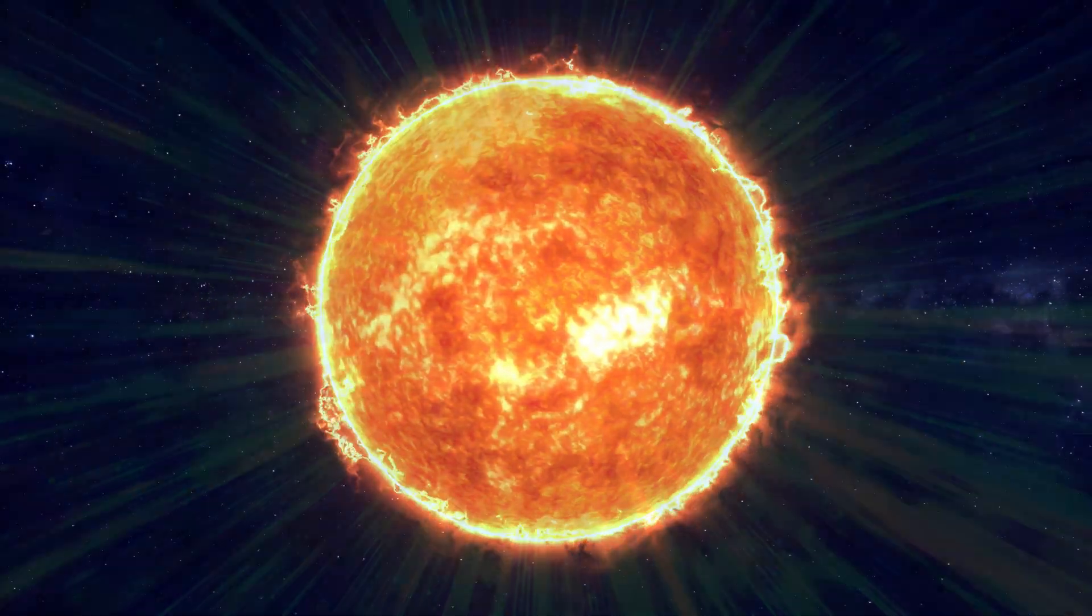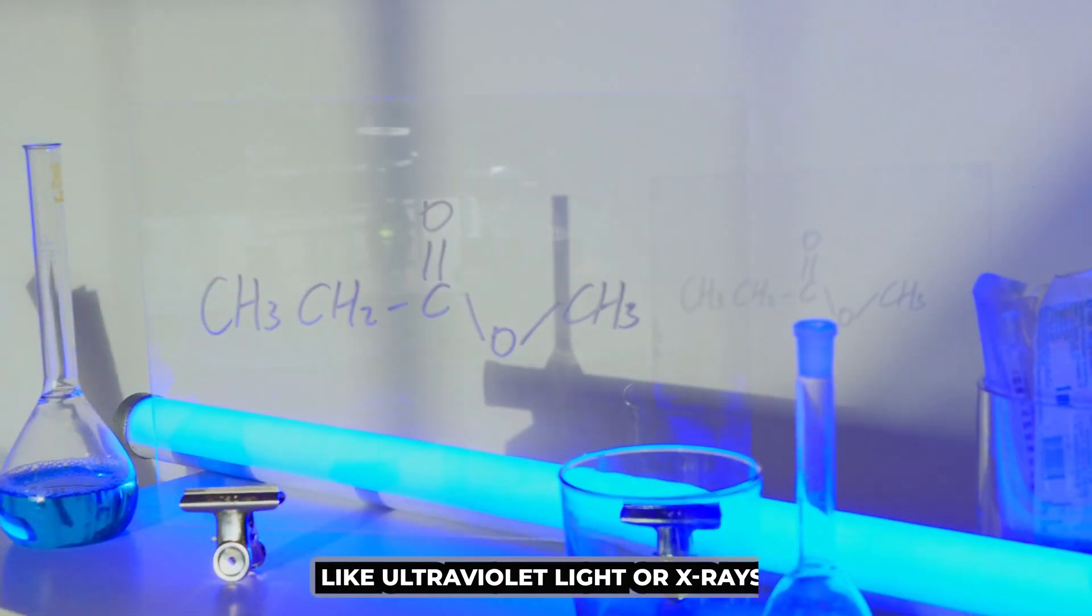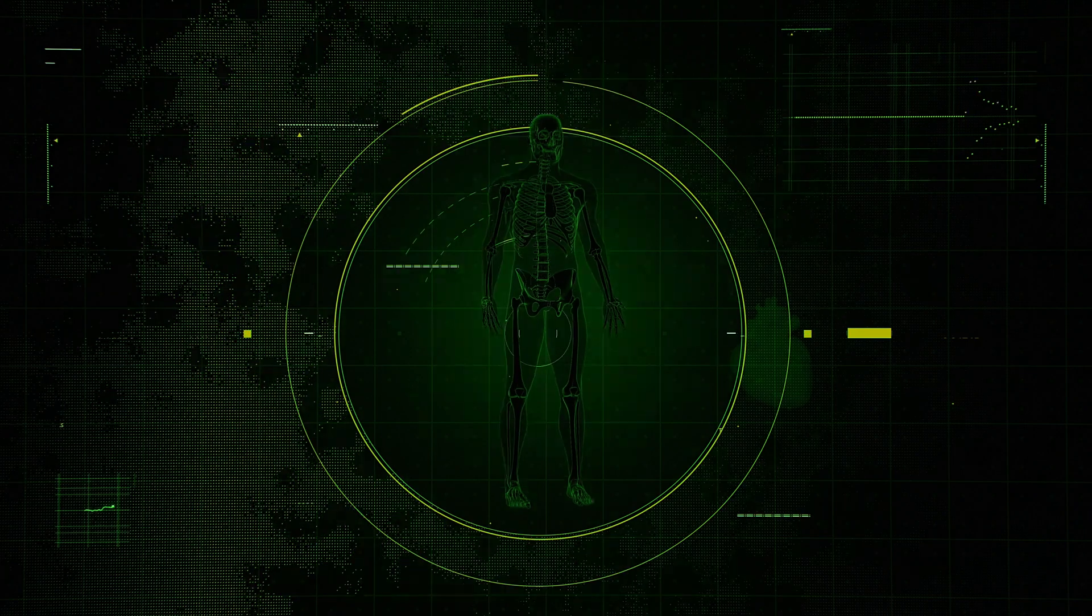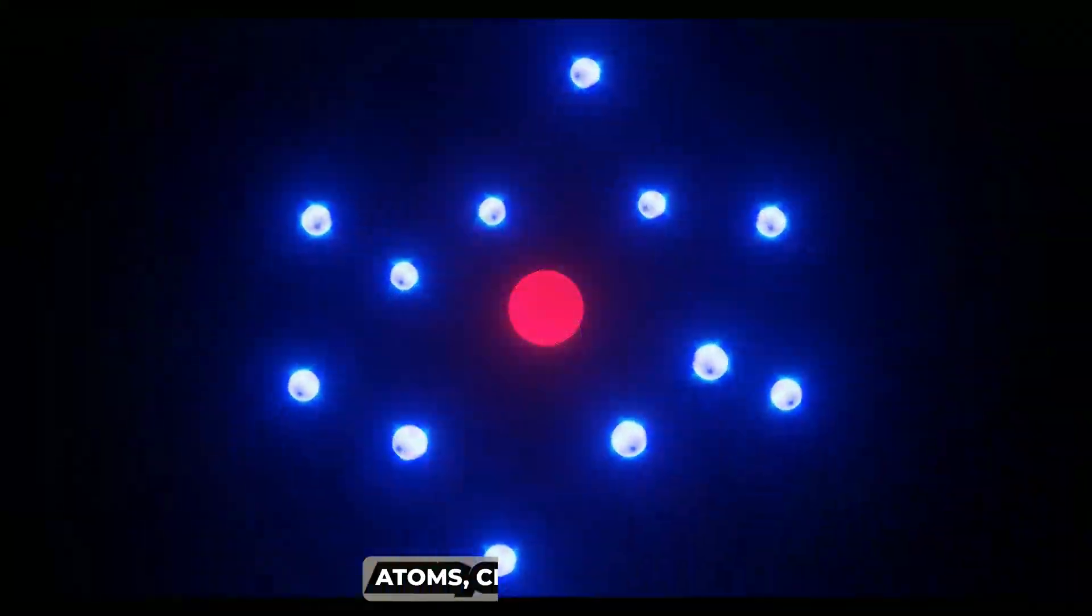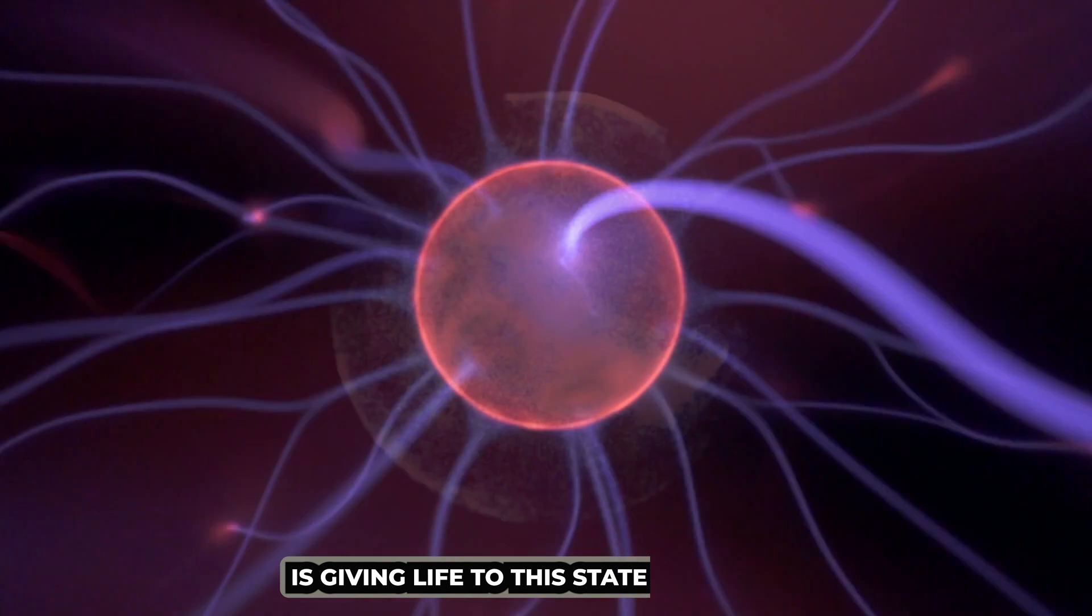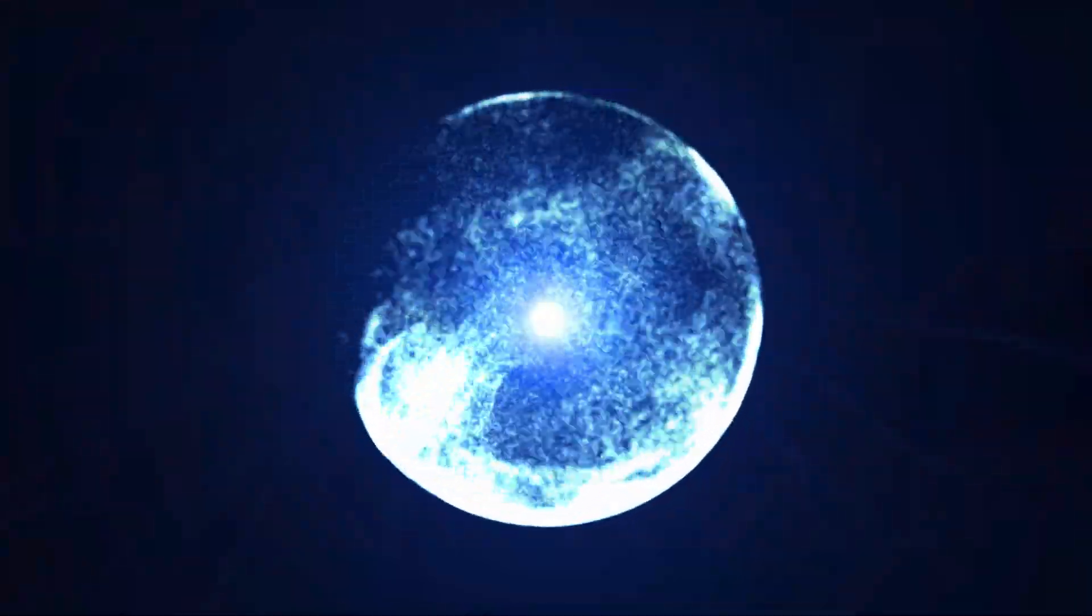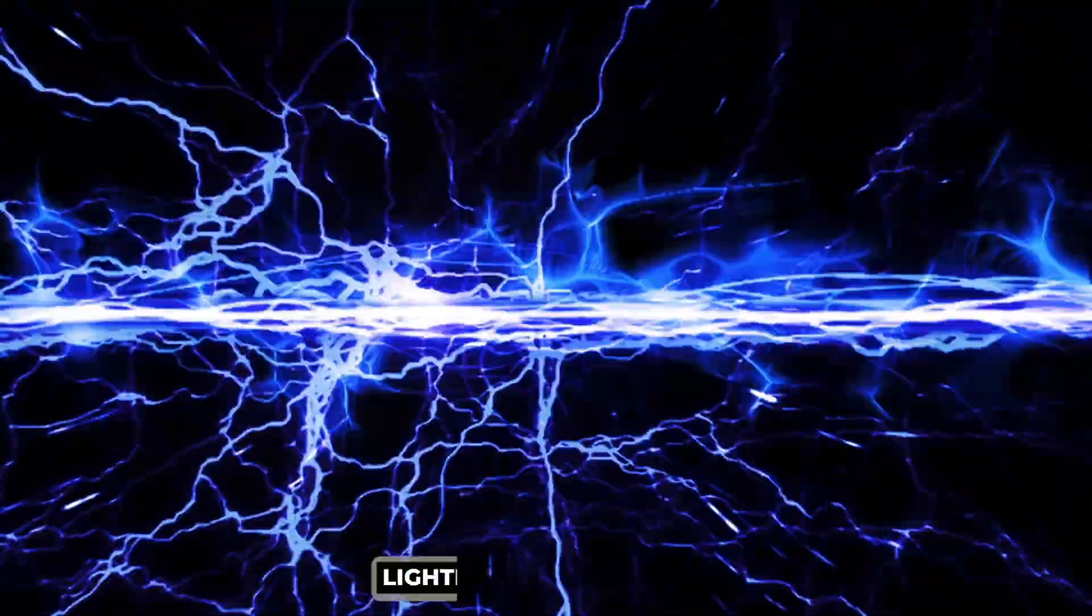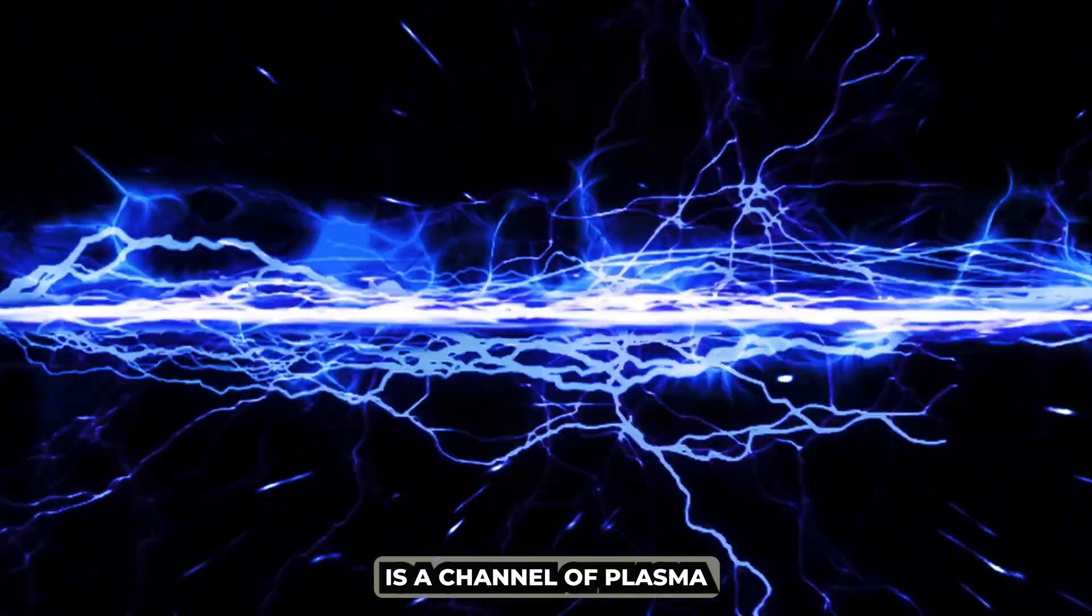We can also use radiation, like ultraviolet light or x-rays. These energetic waves can knock electrons off atoms, creating plasma. It's like light itself is giving life to this state of matter. And let's not forget electrical discharges. Lightning, for example, is a channel of plasma that runs through the air, created by a huge electrical potential difference.